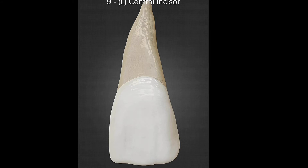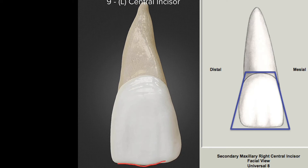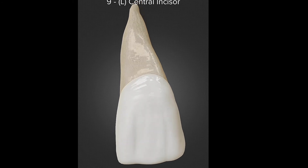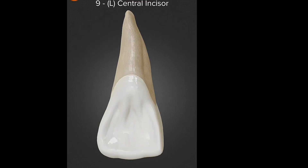The mesio-incisal line angle is sharp, close to 90 degrees, while the disto-incisal line angle is rounded. The incisal outline is regular and straight. The cervical outline is semicircular. The root is cone-shaped with a single root and a blunt apex, and the root is slightly offset distally from the central line of the tooth.